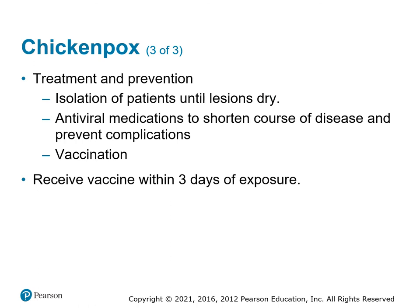If you have somebody with suspected chickenpox, you need to isolate them until their lesions dry. Chickenpox is traditionally a childhood disease but can return in adults in a different form, such as shingles, when it reactivates later in life, often in response to stress. The rash persists for seven to ten days but heals within a month. A small but significant number of patients experience post-herpetic neuralgia. There is a vaccine for chickenpox, antiviral medications that can help shorten the disease and prevent complications, and you can receive the vaccine within three days of exposure.